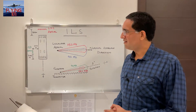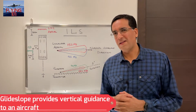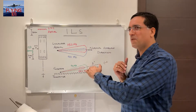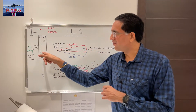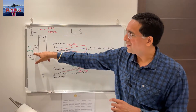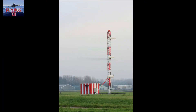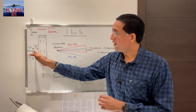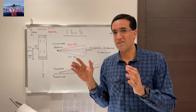Now let's talk about the glide slope aerial and its role in the system. The purpose of the glide slope antenna is to provide guidance to an aircraft in the vertical plane — to bring the aircraft onto the correct descent profile to position it for landing within the touchdown zone. The glide slope aerial is usually about 300 meters from the beginning of the runway and about 200 meters from the runway edge.